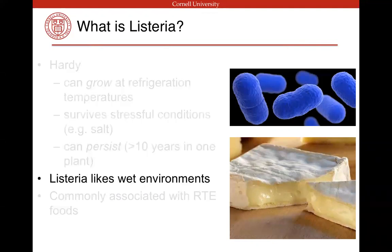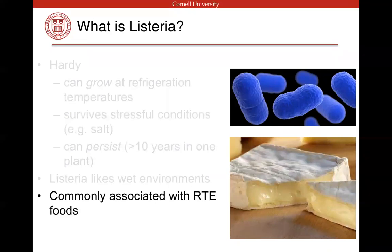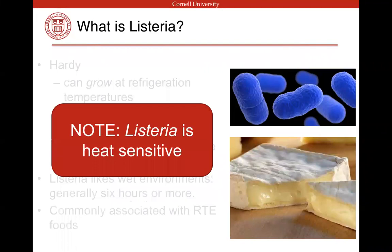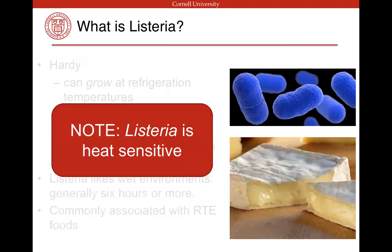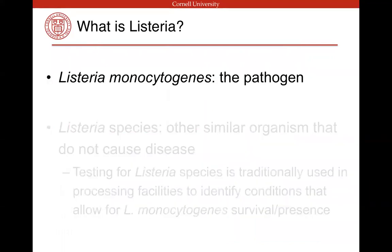Listeria likes wet environments, which I'll talk more about later, and it's commonly associated with ready-to-eat food. I want to remind everyone that Listeria is heat-sensitive, so if you cook your food the Listeria will die. We talk so much about Listeria that it almost feels like a superbug that can survive anything, but it's associated with ready-to-eat foods because ready-to-eat foods aren't cooked, so it is heat-sensitive.